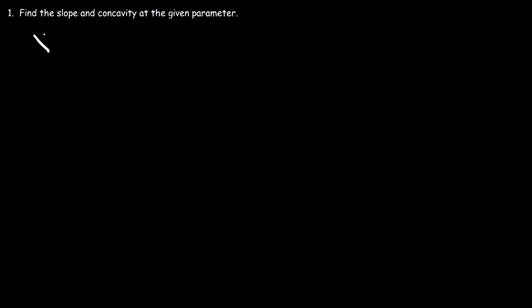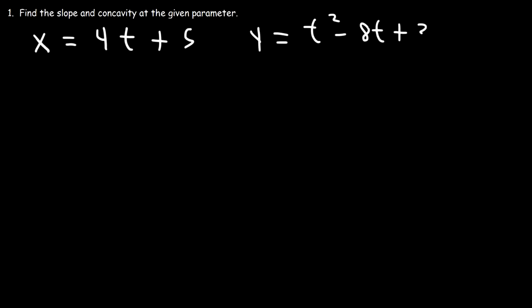Let's say that x is equal to 4t plus 5, and let's say that y is equal to t squared minus 8t plus 3. Find the slope and concavity at the given parameter, that is when t is equal to 2.